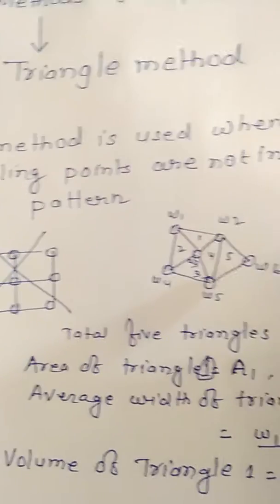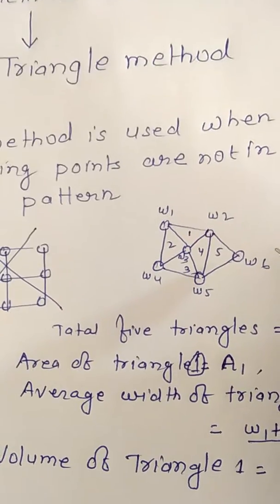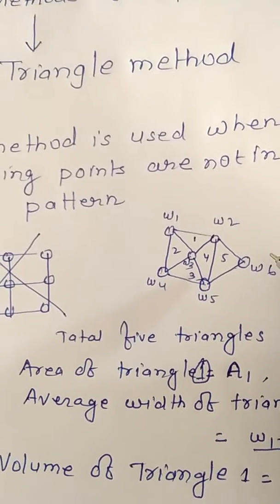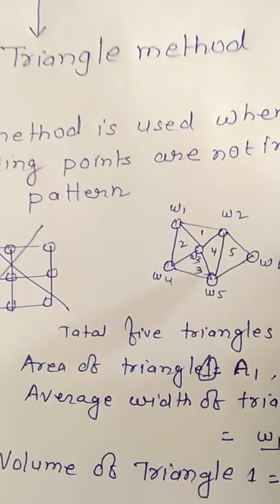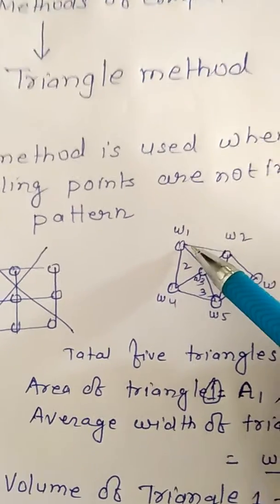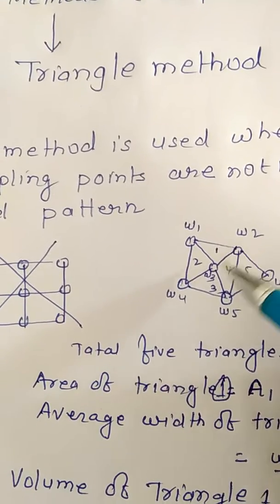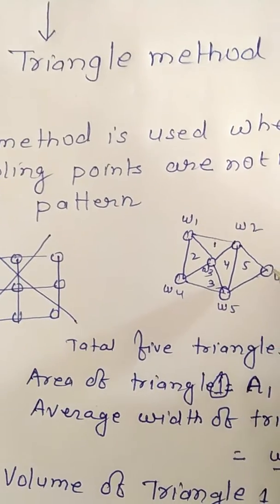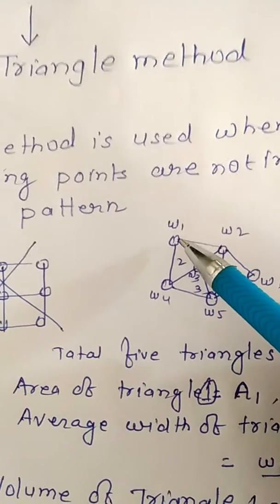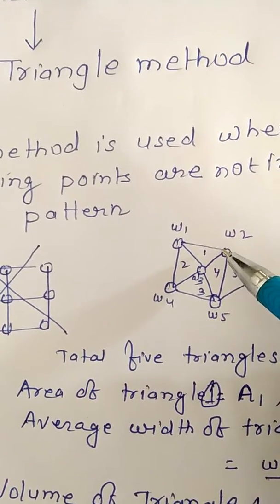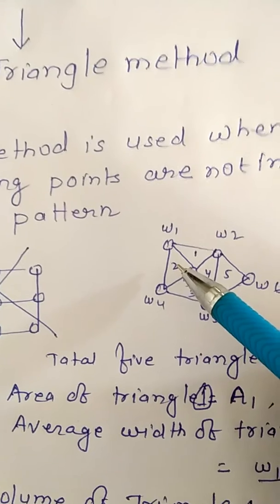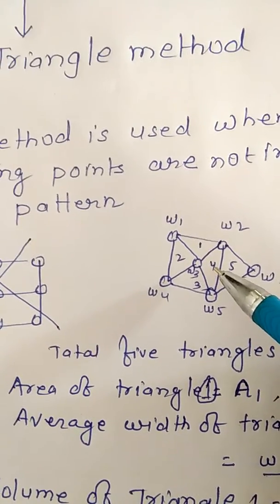First, we construct triangles. Here we can see that five triangles can be constructed by joining all the boreholes. We connect each borehole to the adjacent boreholes through straight lines — one triangle is completed here, similarly another triangle is completed here, and another triangle here, here, and here.